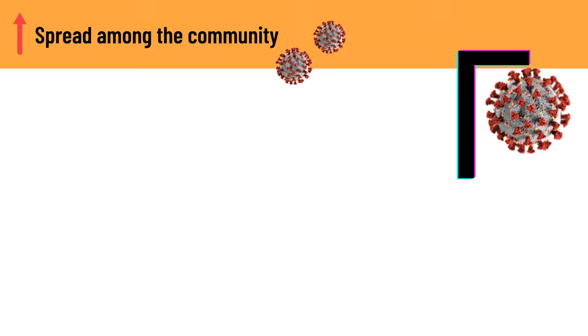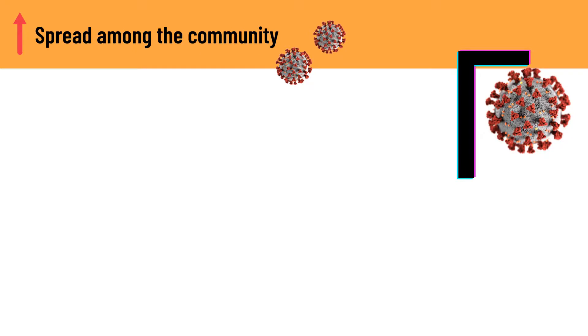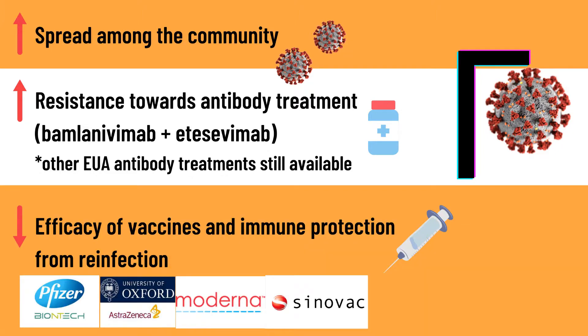In general, the mutated characteristics of the gamma variant include more easily spreading among the community than the original SARS-CoV-2, and an increased resistance towards the combination of bamlanivimab and etesevimab monoclonal antibody treatment, while other emergency use authorization antibody treatments are still available. Examples of vaccines that conducted studies against the gamma variant include Pfizer, AstraZeneca, Moderna, and Sinovac.